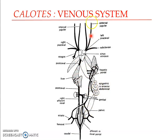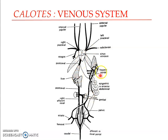In summary, the venous system of Calatis is composed of three main vein complexes: the two pre-caval complexes — the right and the left — and the post-caval complex, plus the two portal systems: the hepatic portal system and the renal portal system.